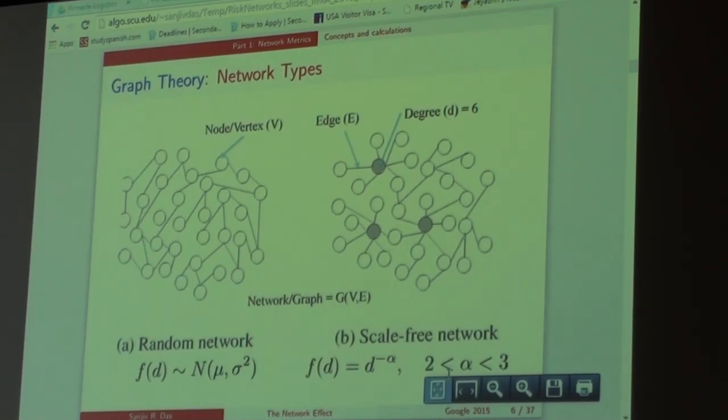The one on the left is what we call a random network. So if I put down a bunch of nodes, let's say in this room, everybody here has a node, and I just randomly connect two people. And I do this a few times, and I say on average everybody's going to have about three connections. That's a random network.